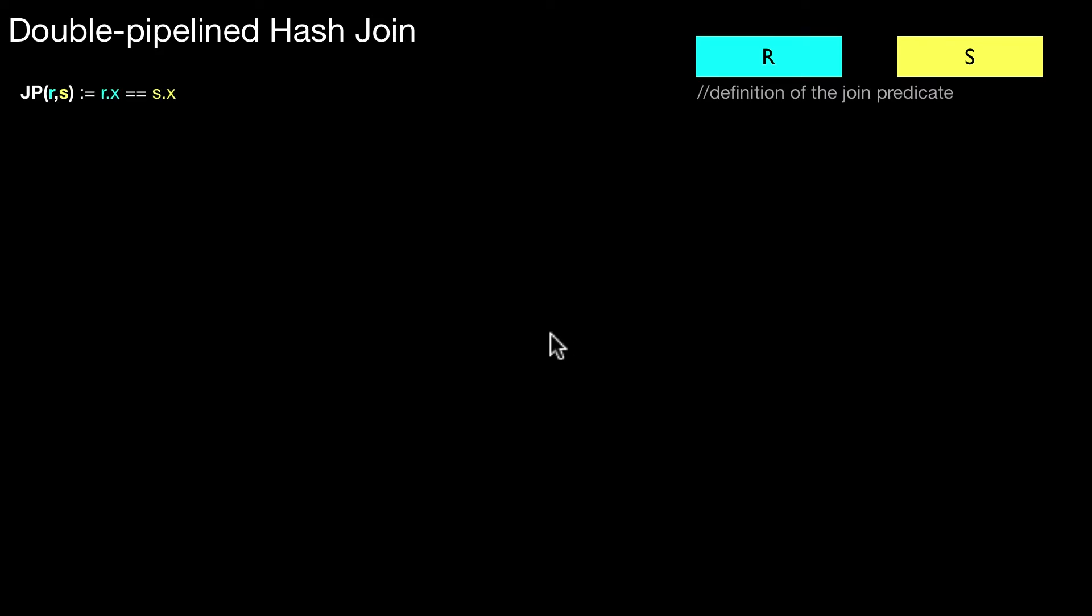If you look at the pseudo code we have a join predicate again as before. And we need a helper function. This is used for both inputs. It always puts the tuple into the hash table belonging to the specific input and probes the other input. That is what is done in the helper function.